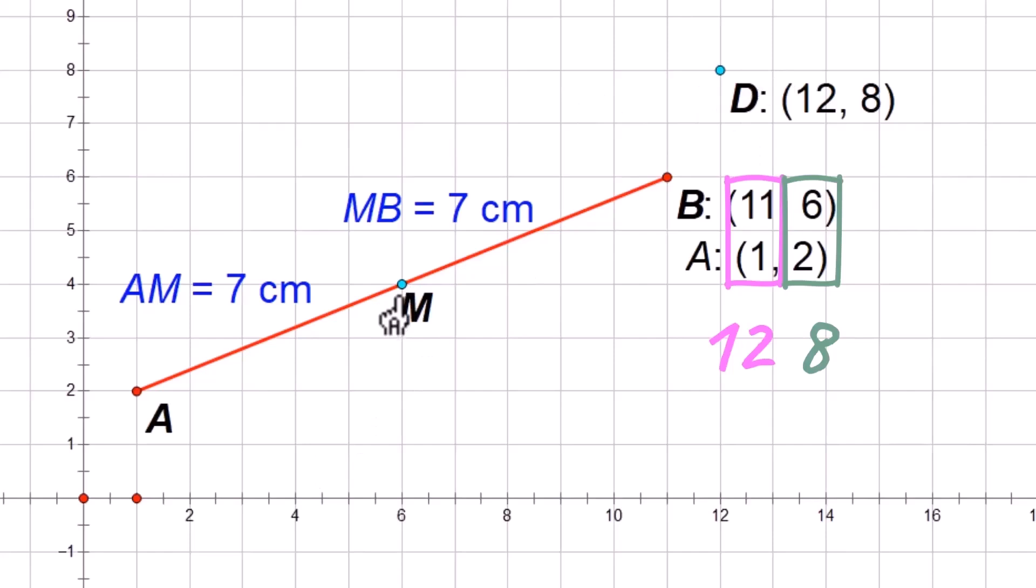You want the midpoint to be here. The midpoint's halfway. The midpoint is 6, 4. Compare that to the 12, 8. What did they do? We added the x's together and divided by 2. We added the y's together and divided by 2.